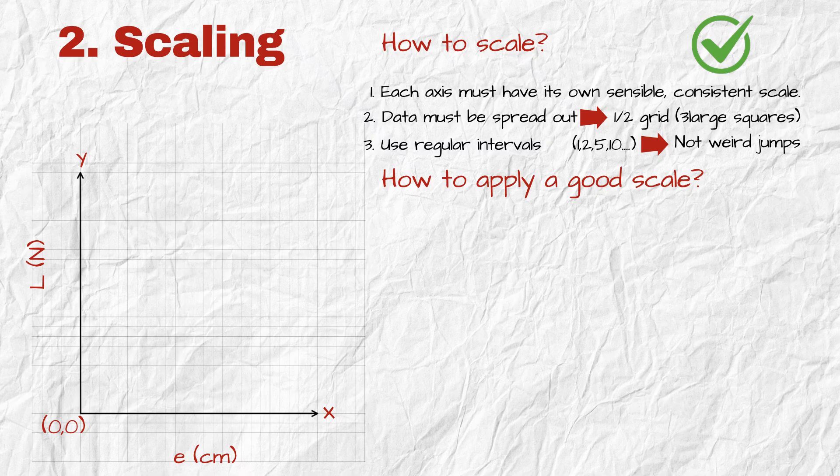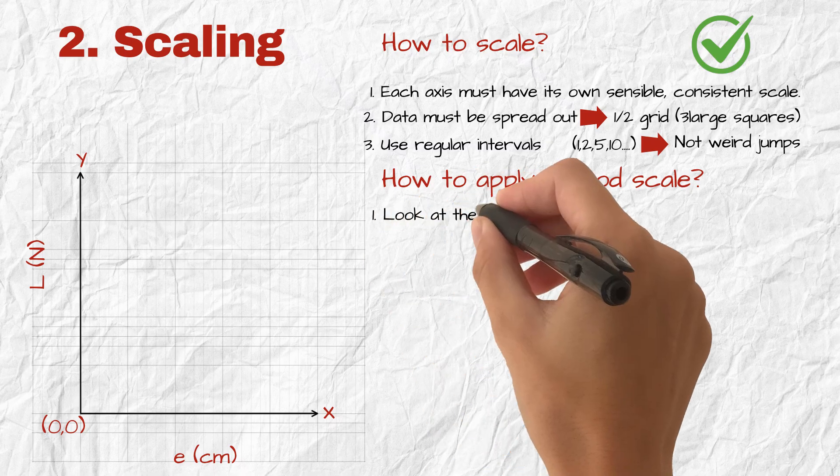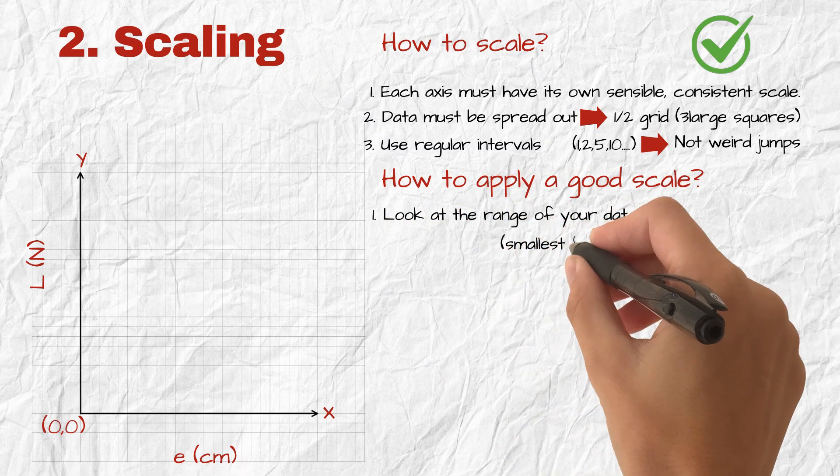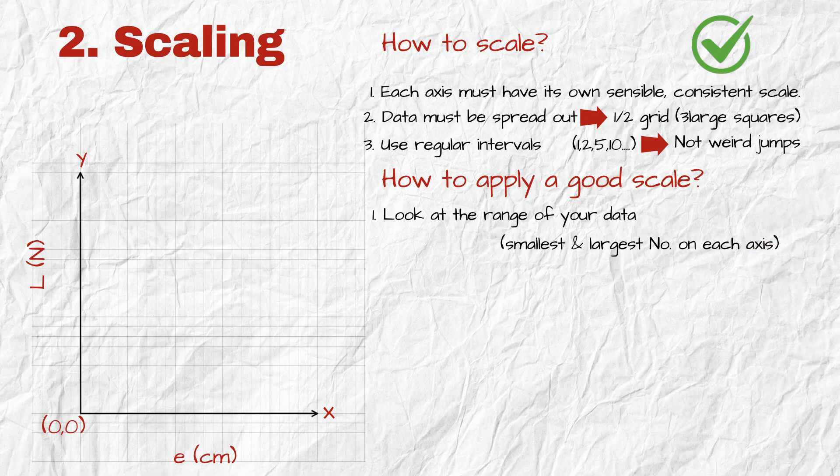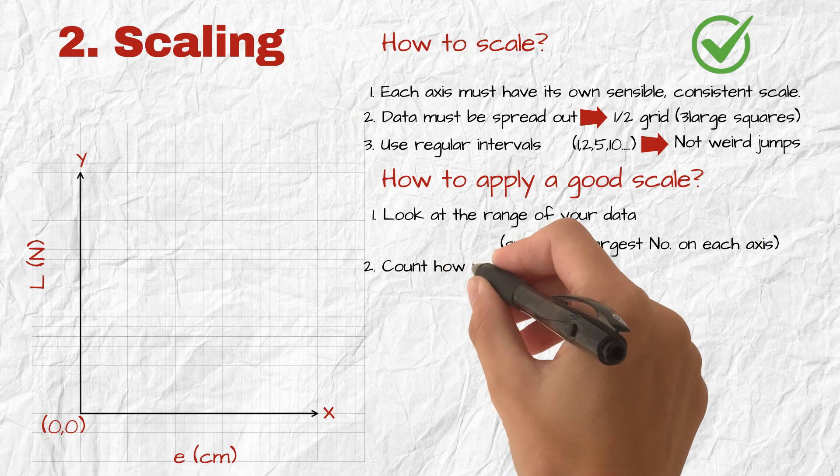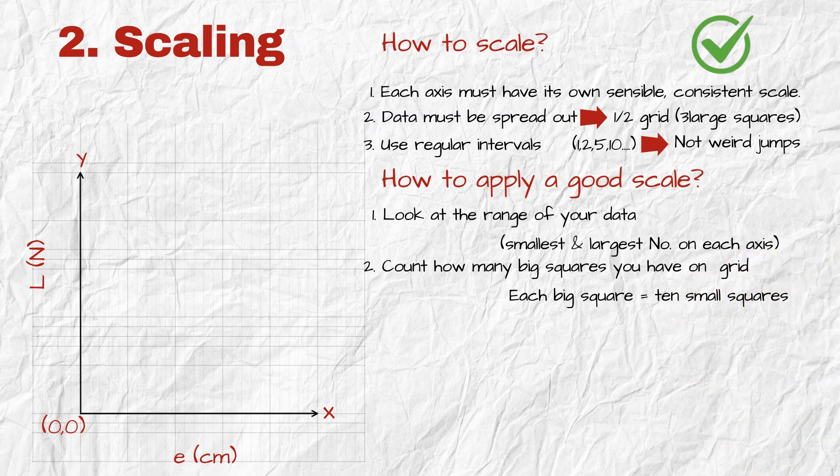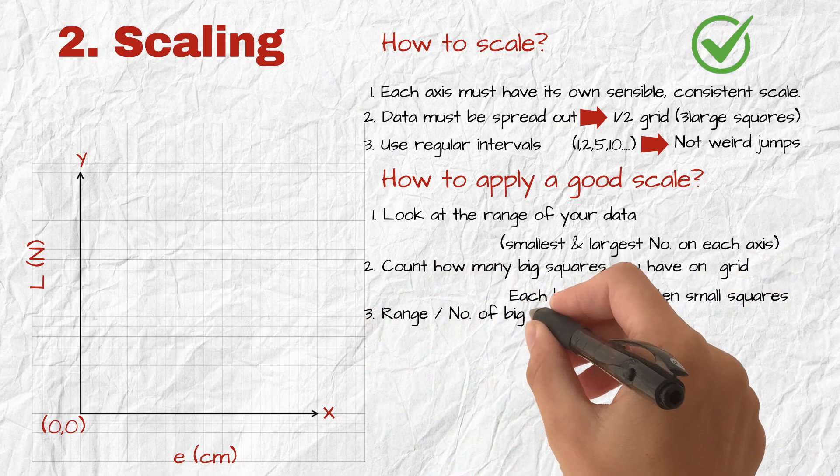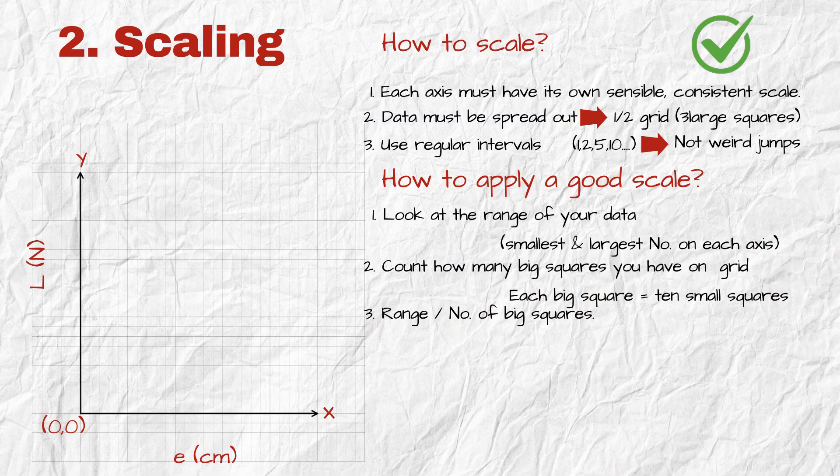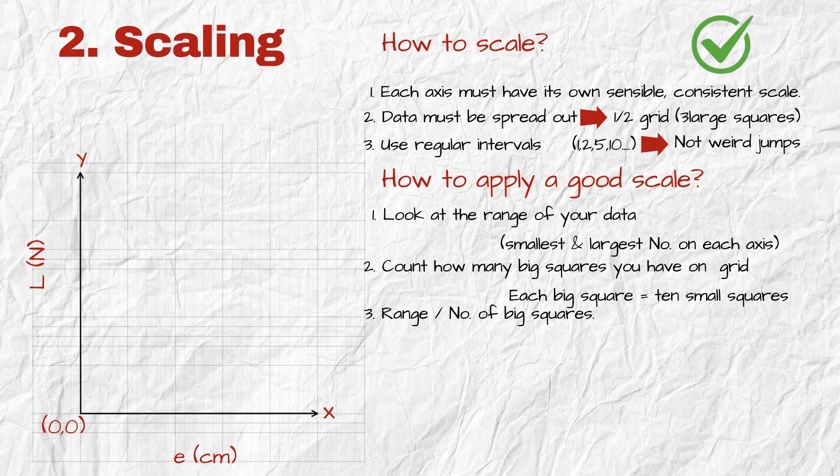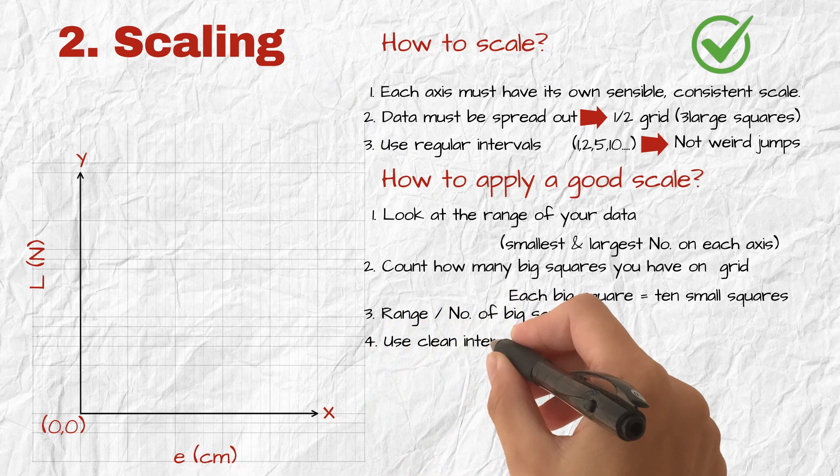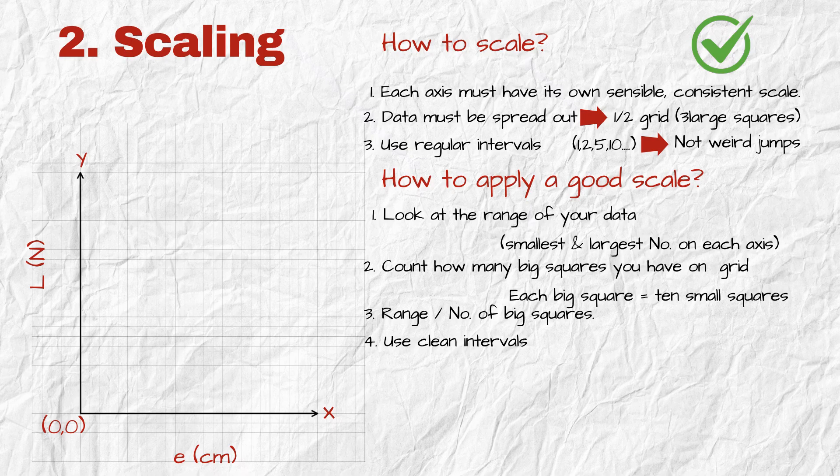Now how do you choose and apply a good scale? Step one, look at the range of your data. Find the smallest and largest numbers on each axis. Step two, count how many big squares you have on the grid. Each big square equals ten small squares. Step three, divide the range by the number of big squares. That gives you a scale that spreads the data over at least half your axis length. Step four, use clean intervals. Avoid strange jumps. Let's practice.